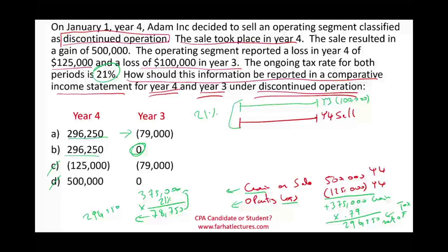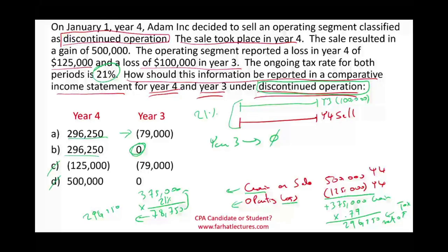Some might say the sale took place in Year 4, so Year 3 should not have anything under discontinued operations. Indeed, when we initially reported our numbers for Year 3, we had not sold the operating segment yet, so we reported zero. But that's not where we are standing now. We are standing at Year 4, and when we present Year 3 alongside Year 4, we have to assume it was a discontinued operation because the financial statements must be comparative.